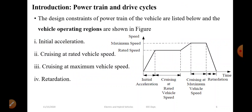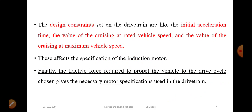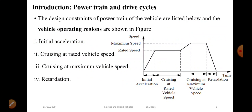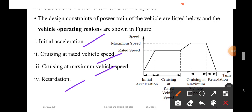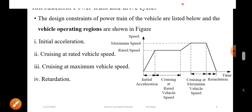The design constraints of the vehicle are listed below and the vehicle operating regions are shown in a figure. The design constraints of the power train include: initial acceleration, cruising at rated as well as maximum vehicle speed, and retardation and acceleration. The graph is plotted as speed versus time, with rated speed and maximum speed on the y-axis. Cruising means a constant speed is maintained.